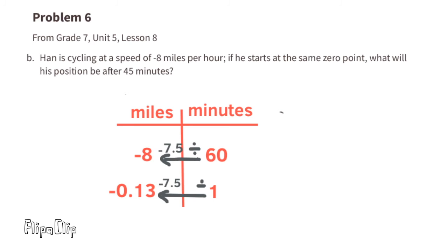Negative 0.13 miles per minute times 45 minutes equals approximately negative 6 miles. So in 45 minutes, Han rides negative 6 miles, which could mean 6 miles to the west.